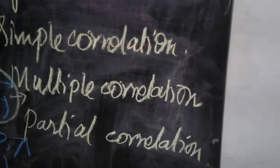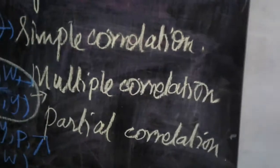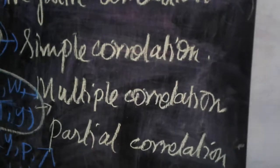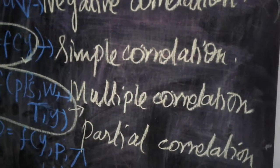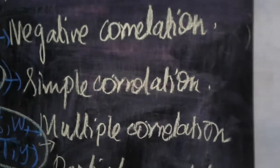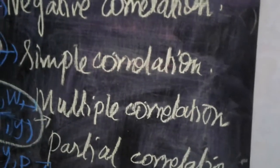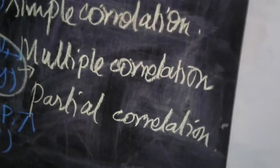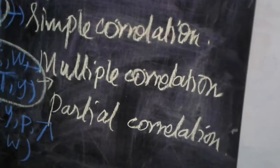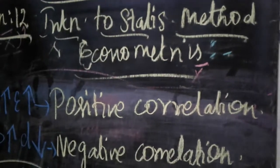Partial correlation: even though we have so many variables, we concentrate only on a few. For example, even though the demand function is D = f(Y, P, Ps, T, W), we concentrate only on D = f(Y) — when income increases, demand increases; when income falls, demand falls. So in partial correlation, we concentrate only on demand and income. That's the end of today's class; we will see the remaining things in the next class. Thank you.